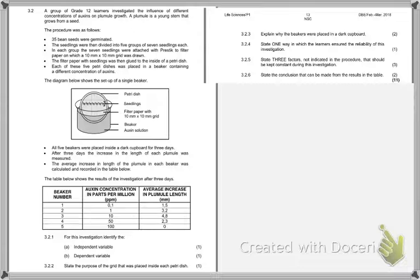Let's get into it. It's really important to spend some time reading this introductory paragraph and unpacking it, knowing exactly what is going on along with the diagram and table they have provided. Starting at the very beginning, it says a group of grade 12 learners investigated. I want you to pay attention here. It says the influence of different concentrations of auxins on plumal growth.